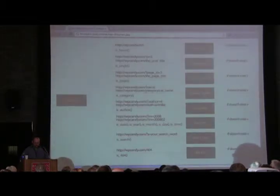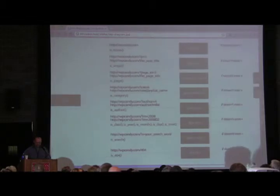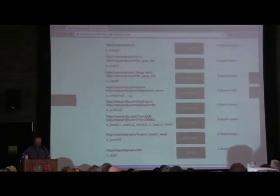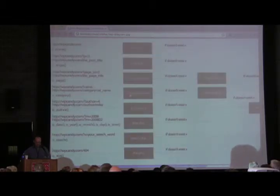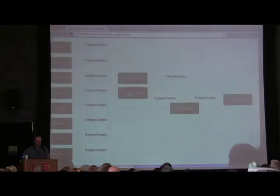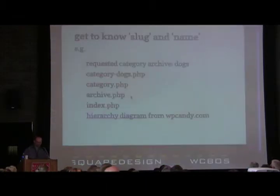This is all linked from the Codex. WP Candy put together a pretty cool spreadsheet showing the decision WordPress makes — the file it looks for, and if that file doesn't exist, it looks for another one, and it all comes back to index.php.